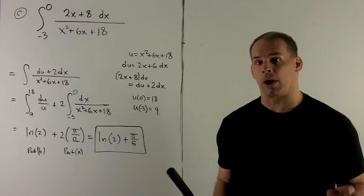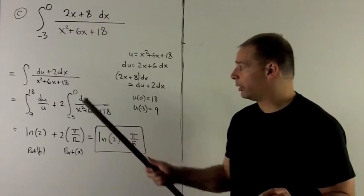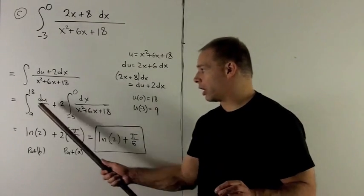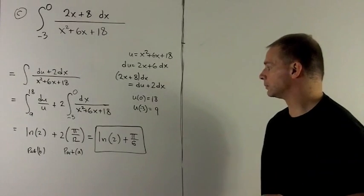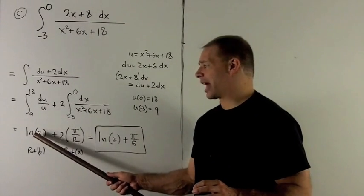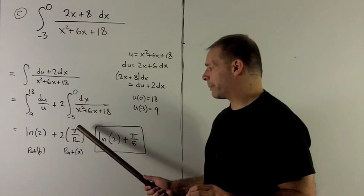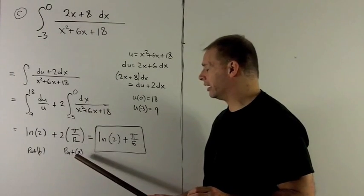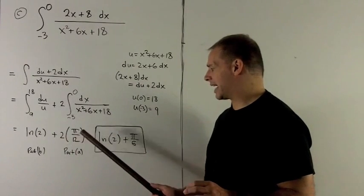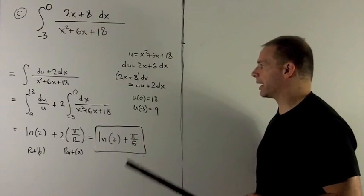So that would be part A and part B. So really, we're shortcutting a lot in this example because we've already done the work on the previous board. I already have the answer to this. That's your natural log of 2 from part B. I already have the answer to this. This is my pi over 12 from part A. The 2 in front hits that to give me pi 6. And so I have natural log of 2 plus pi 6.